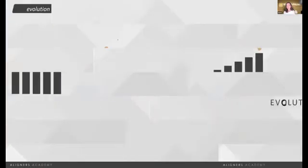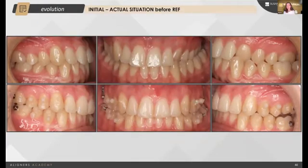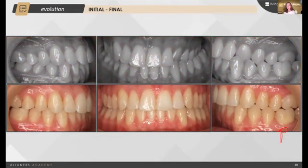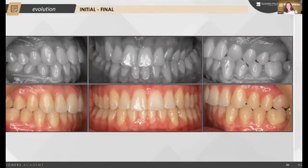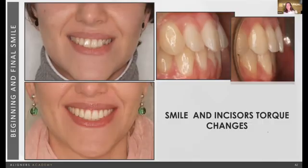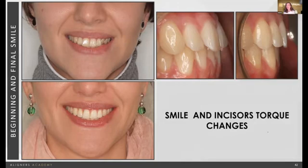This is the evolution of the case. We can see the initial state and the end of the first set of aligners, where we were using criss-cross elastics, even though we used horizontal attachments to control the torque during the expansion. We had some premature contact between the palatal cusp of the upper molar and the lower molar, so we asked for additional aligners with extra labial root torque of the molars and extrusion. This is the final correction of our patient — the initial and final expansion in the upper and lower arch. We can see the difference in torque at the end of treatment, and we need to overcorrect the overjet to prevent premature contact.